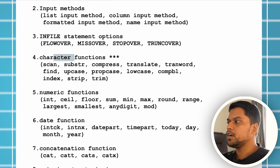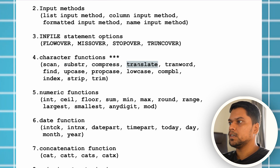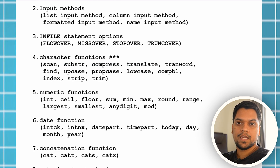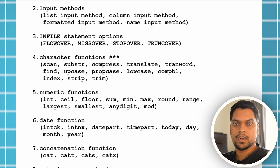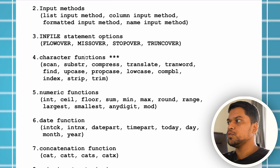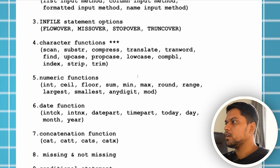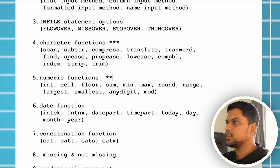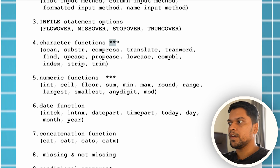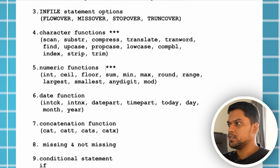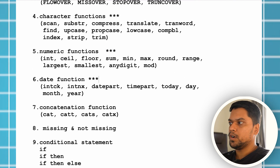Character functions are very important. You can see all these functions — scan, substr, compress, translate — because in day-to-day life as a SaaS or clinical SaaS programmer, we'll be using these functions a lot. The same applies to numeric functions, which are also very important, and then date functions, which are also very important.